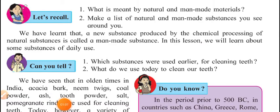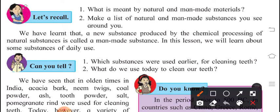A substance which is produced by chemical processing of natural substances is called man-made substance. A new substance produced by chemical processing of natural substances is called a man-made substance. Now, we can give a list for man-made and natural substances.